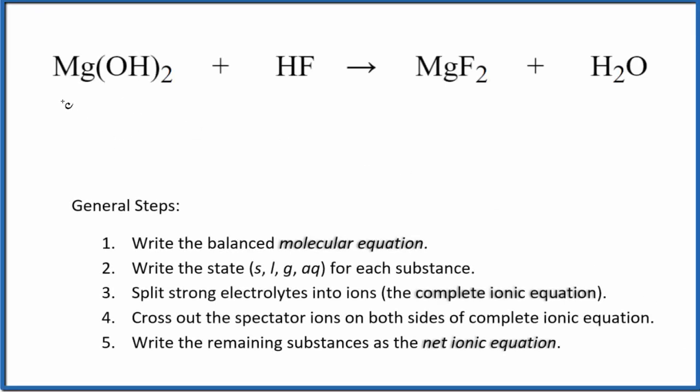Let's balance the net ionic equation for Mg(OH)₂ plus HF. This is magnesium hydroxide, and this is hydrofluoric acid. The first thing we do with net ionic equations is balance the molecular equation. I can see there's one fluorine here and two here, so I'm going to put a two in front of the HF.